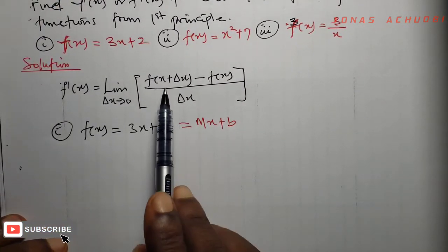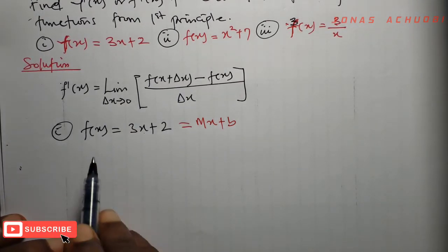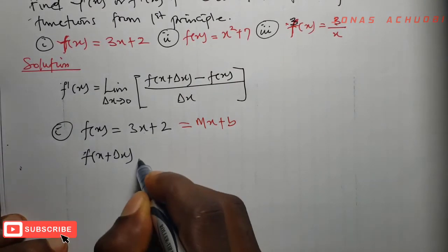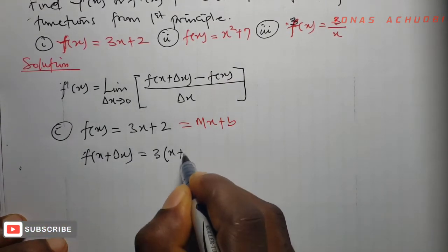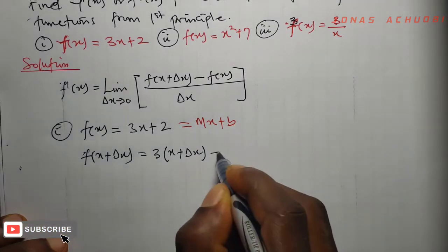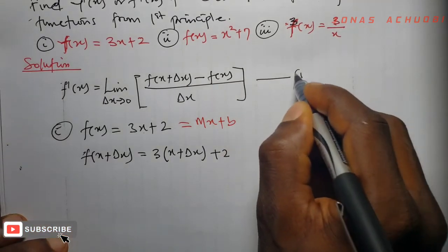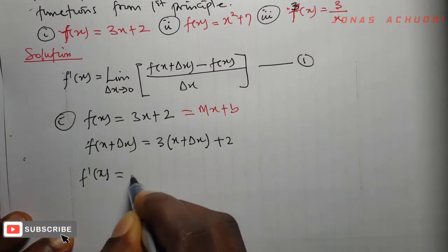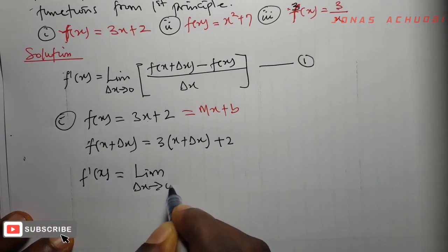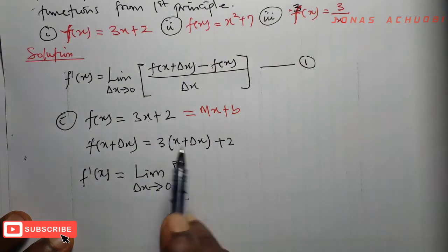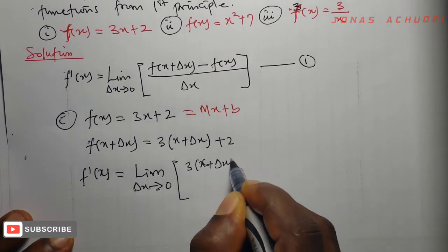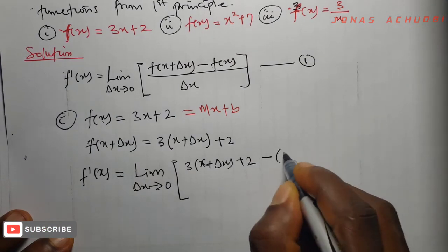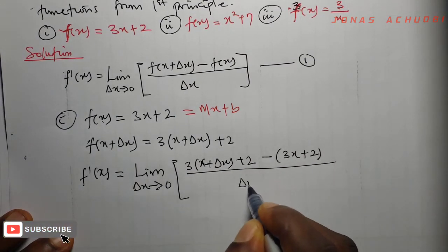So what do we need from first principle? We need f of x plus a change in x. So f of x is 3x plus 2. Then f of x plus a change in x would be 3 into x plus change in x, plus 2. We now come back to our formula and substitute the values. So we have that f prime of x is equal to the limit as change in x tends to 0 of f of x plus change in x, which is 3 into x plus change in x plus 2, minus f of x which is 3x plus 2, divided by change in x.